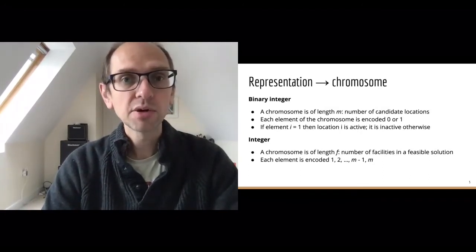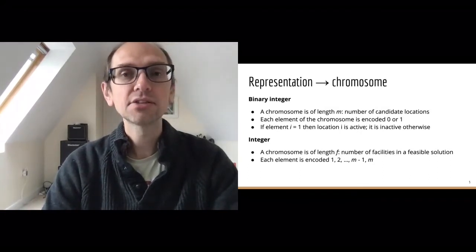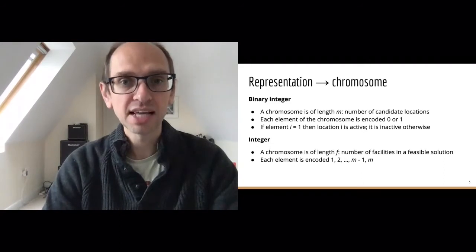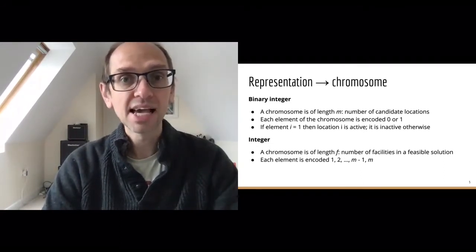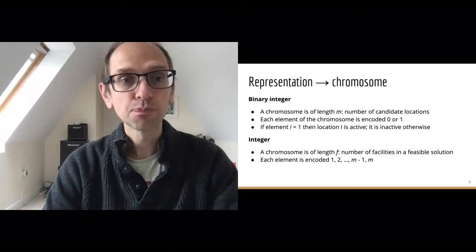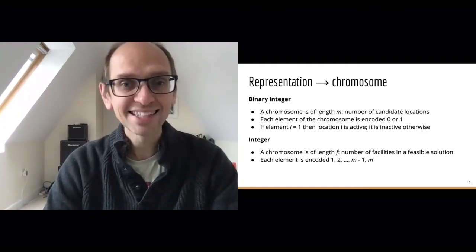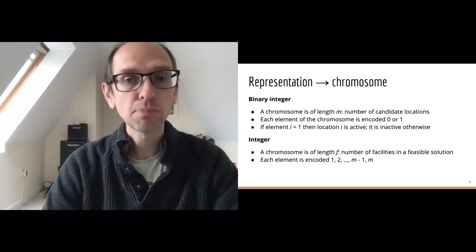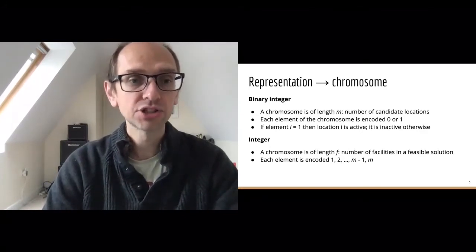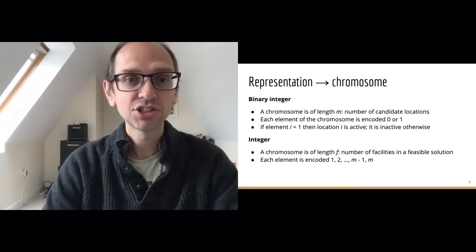With an evolutionary approach, we need to think about how we represent a solution to our problem. We do that using something called a chromosome — an array containing an encoding which represents a solution. Two popular approaches are binary integer and integer encoding.